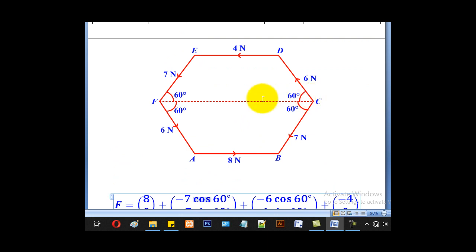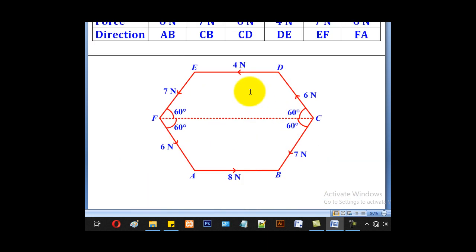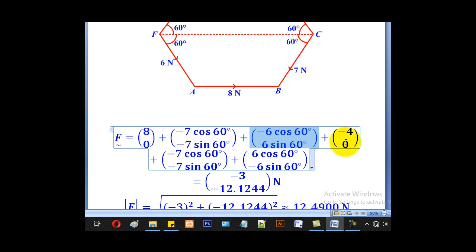For 6, it will be negative 6 cos 60, positive 6 sin 60. Then for 4, it is entirely horizontal going to the left. Meaning it will be negative 4, 0.